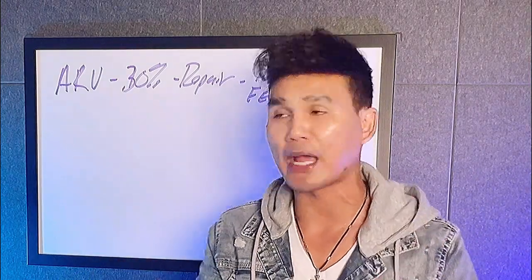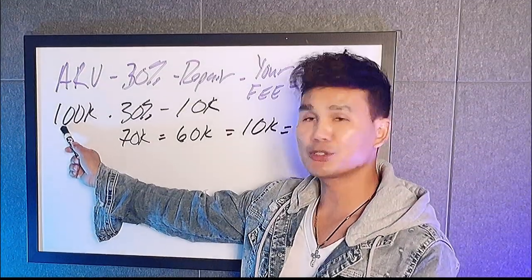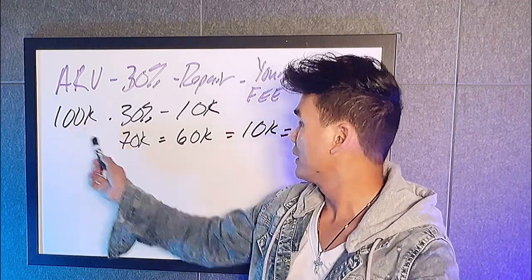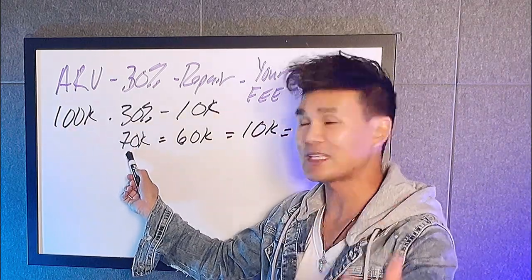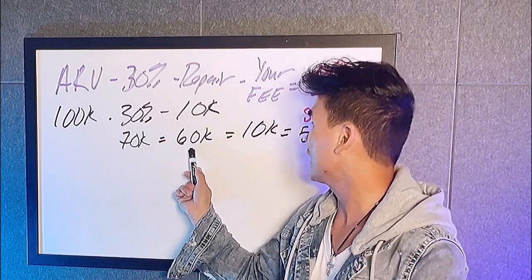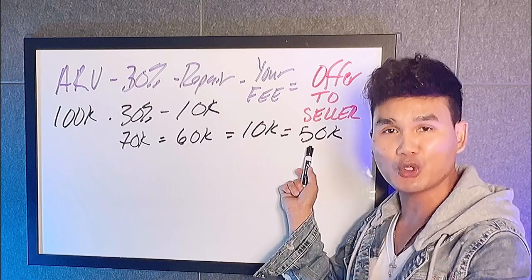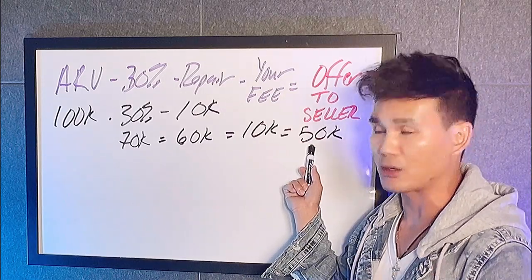In my market, we make between $20,000 to $25,000 on an average assignment fee. So when my VA submits an offer to the seller, we want our spread to be at least $20,000 to $25,000. That would be your offer to the seller. Let's say the property is worth $100,000 after it's perfectly fixed up. Minus 30% puts it at $70,000. Let's say it needs $10,000 in repairs — now it's at $60,000. If you want to make $10,000 on this deal, your maximum offer to the seller would be $50,000.